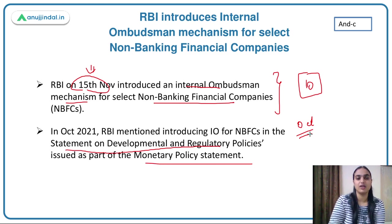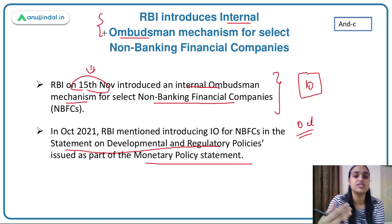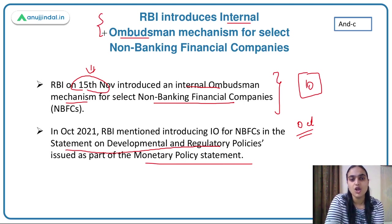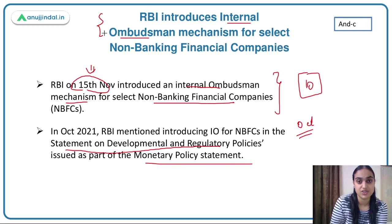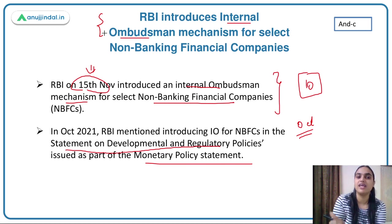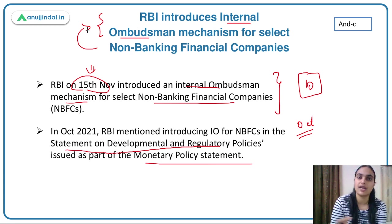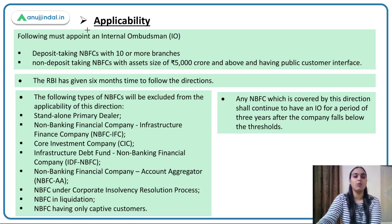An internal ombudsman is basically a senior official who is going to deal with customer grievances and handle customer complaints. If any complaint comes to an NBFC related to any service rendered by them and the customers are not satisfied — if that NBFC is not able to address that problem — then the complaint will reach the internal ombudsman, who handles that entire grievance mechanism.